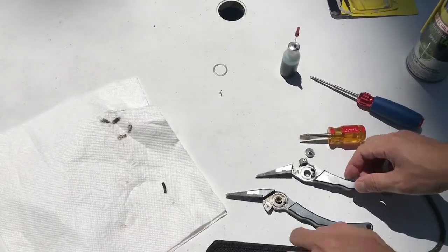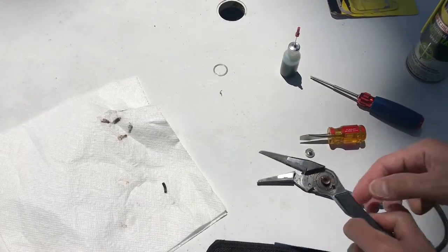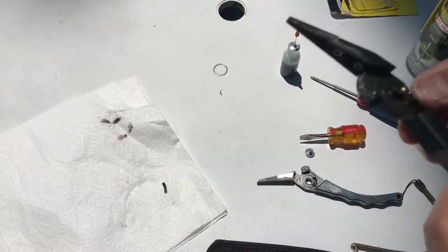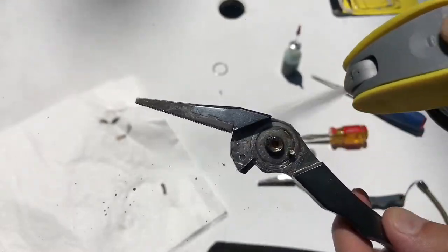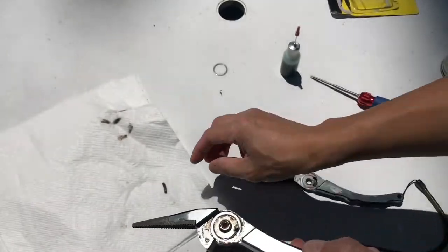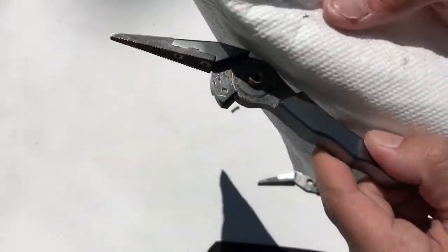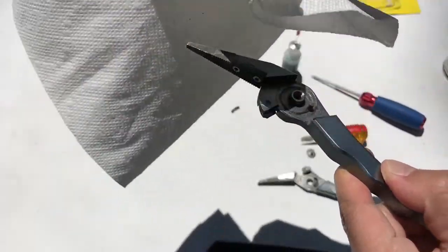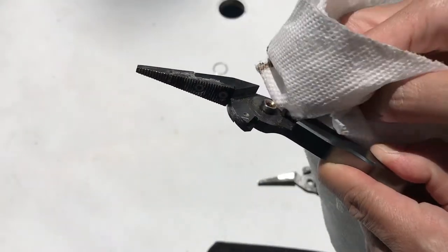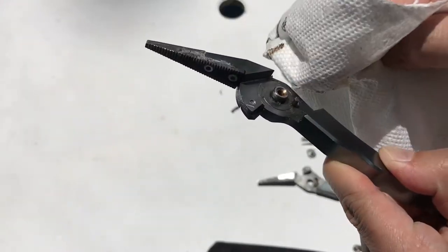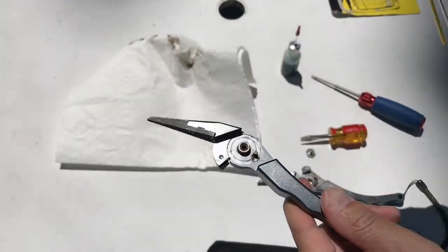Now the main plier section here, spray that, wipe it. It's getting a lot of gunk out.